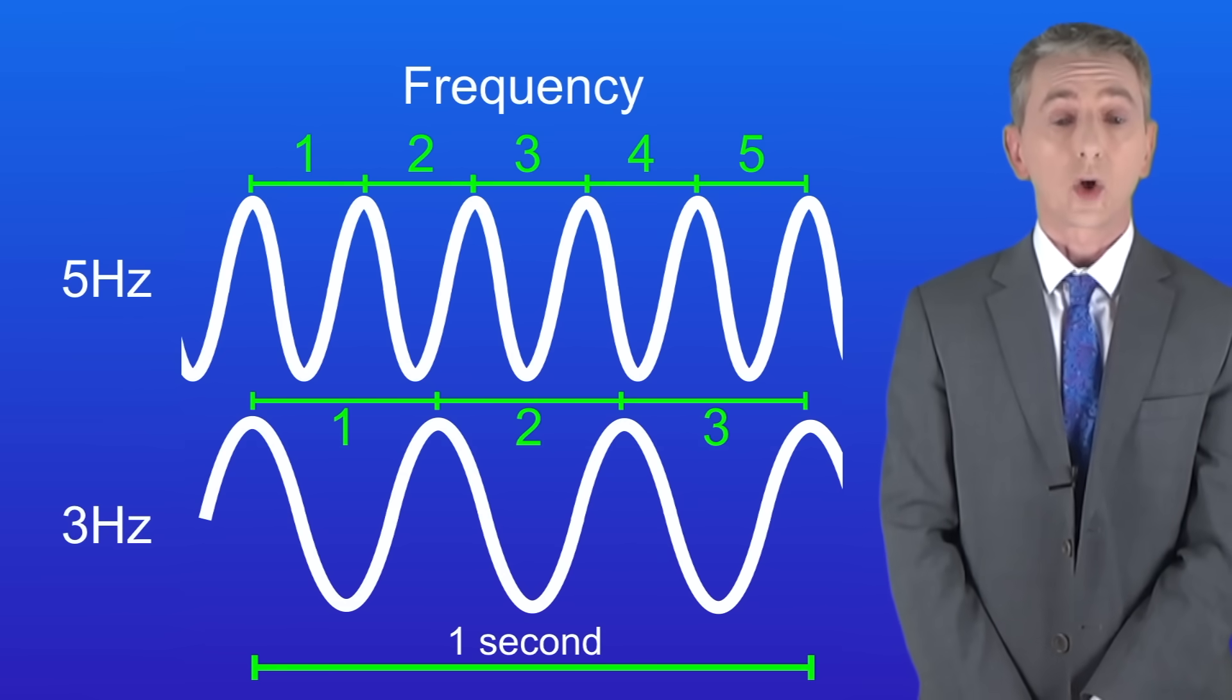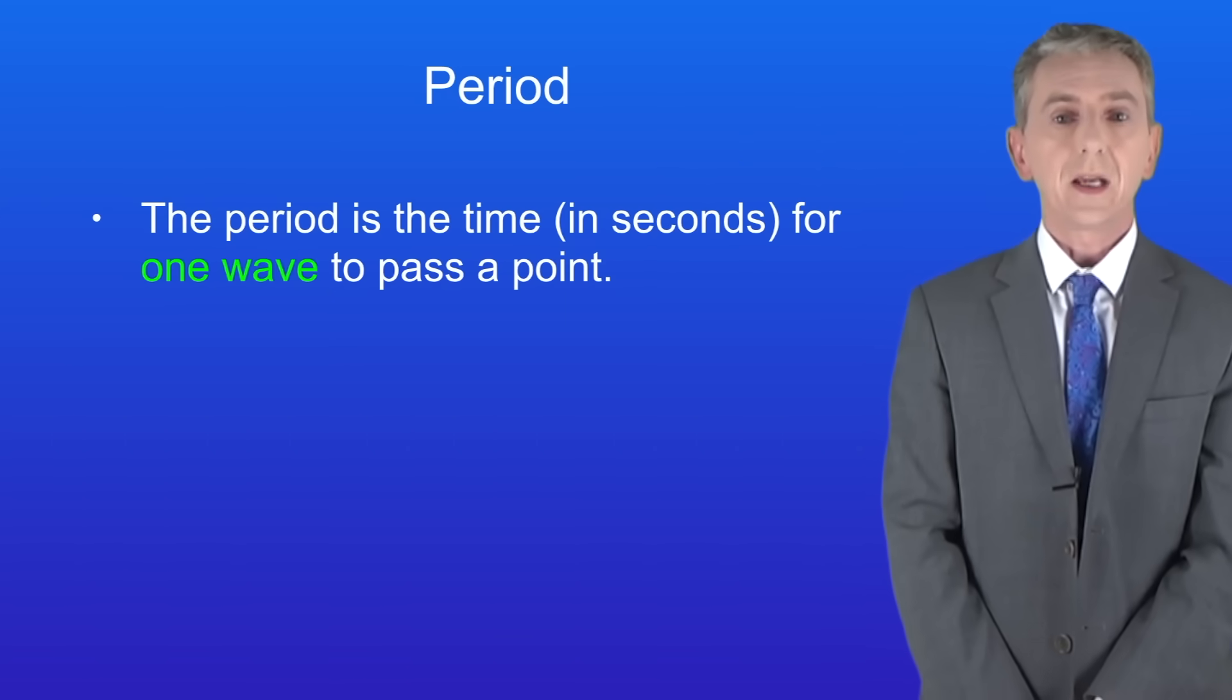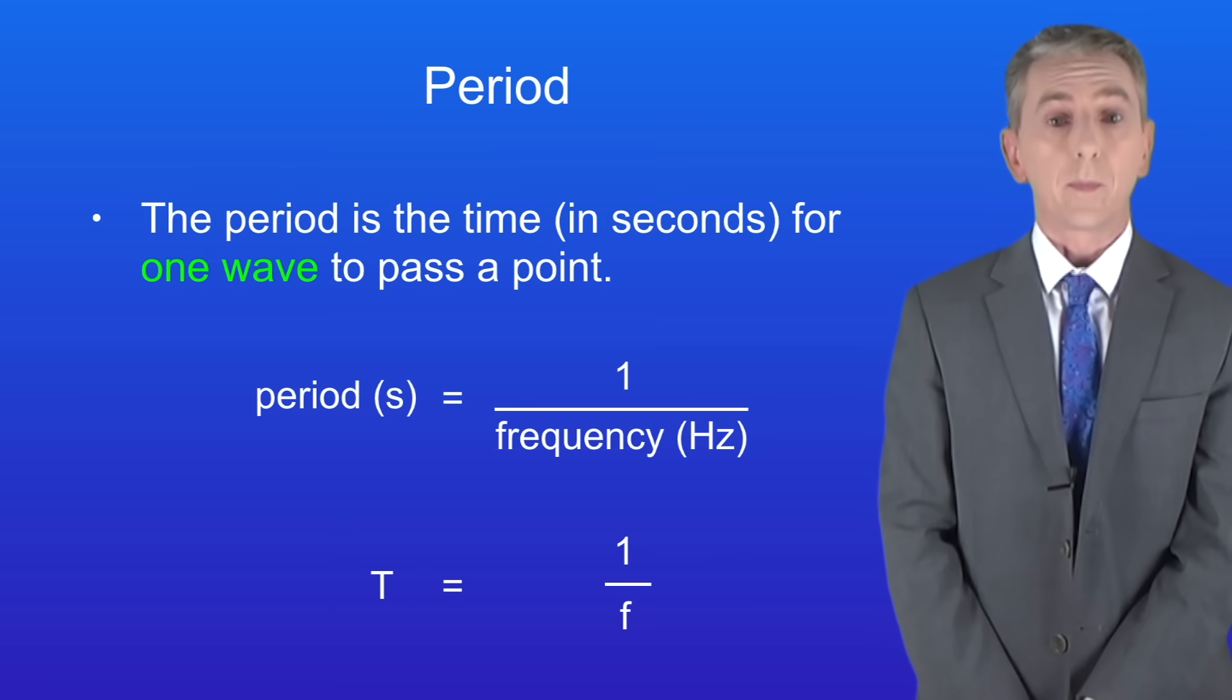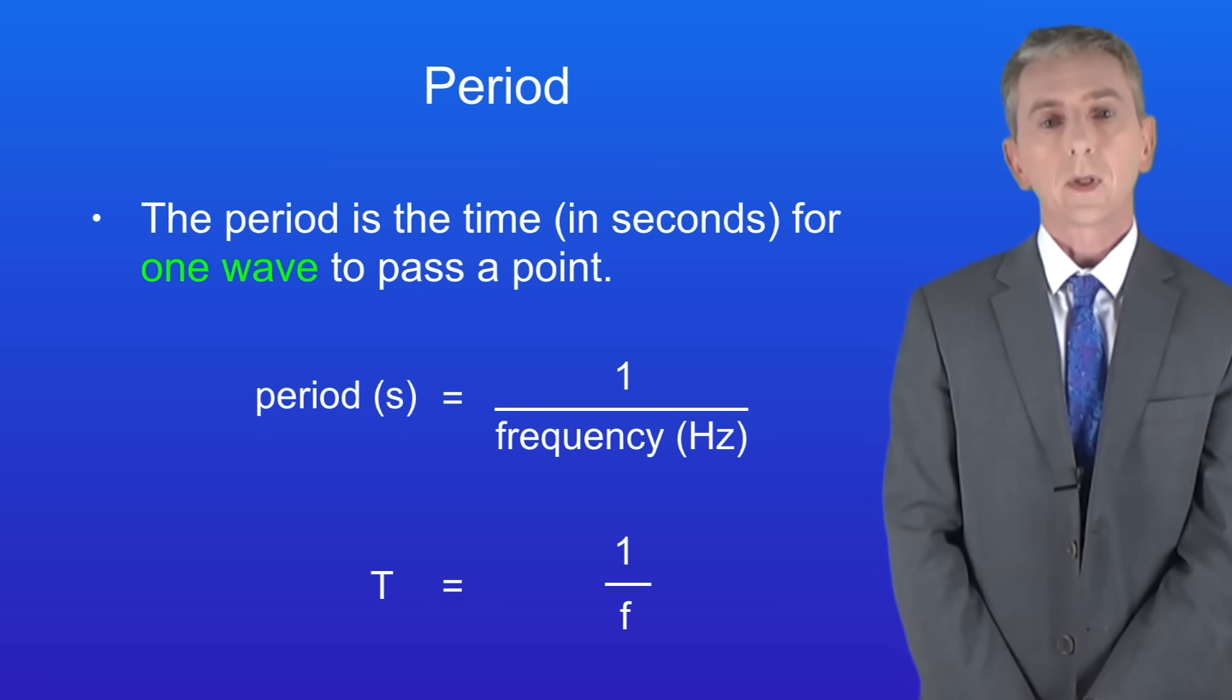Now the final property of waves is called the period. The period is the time in seconds for one wave to pass a point. We calculate the period using this equation. This is given to you in your exam, but the units are not given, so you need to learn them. The period in seconds equals one divided by the frequency in hertz.